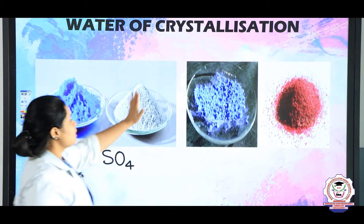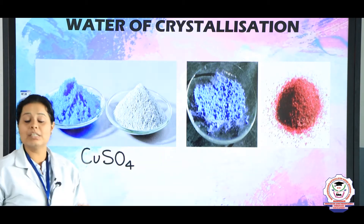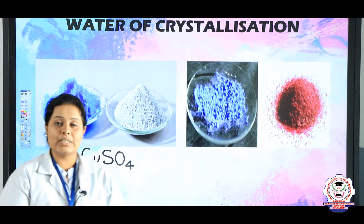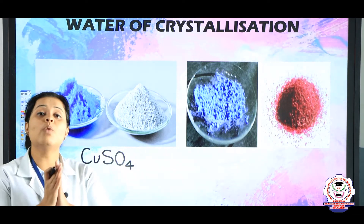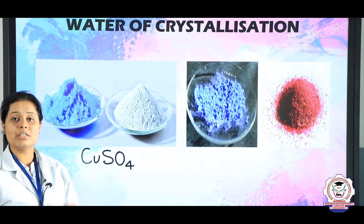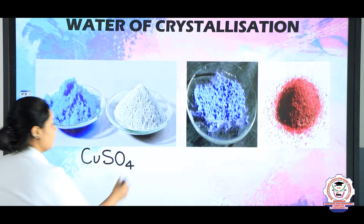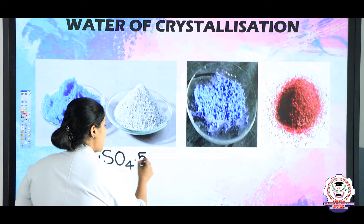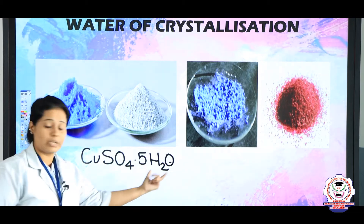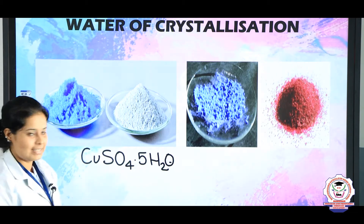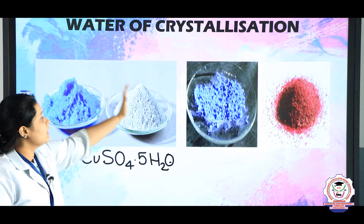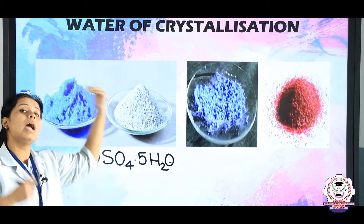Children, the white colour substance is known as anhydrous copper sulphate. Anhydrous means there are no water molecules present. The blue colour substance is known as copper sulphate pentahydrate. Pentahydrate means five molecules of water are present inside. So this is known as the hydrated form and the white one is known as the anhydrous form.